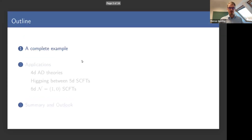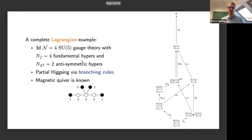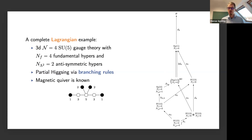Let's jump into a complete example. We start from a Lagrangian theory with an SU(5) gauge theory that has a number of fundamental hypermultiplets and two antisymmetric hypers. As Anton introduced earlier, we can trace out the nested singularities of the Higgs branch using partial Higgsing and branching rules, giving a diagram on the right-hand side. Starting at the bottom — the origin of the Higgs branch with no VEV and the gauge group unbroken — we tune VEVs to break the gauge group, eventually obtaining this nice diagram.